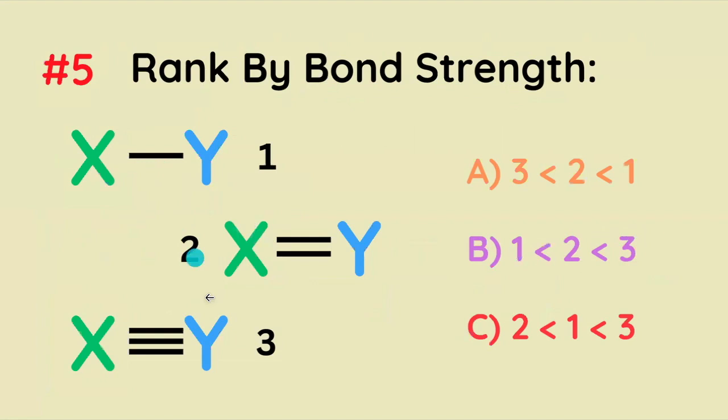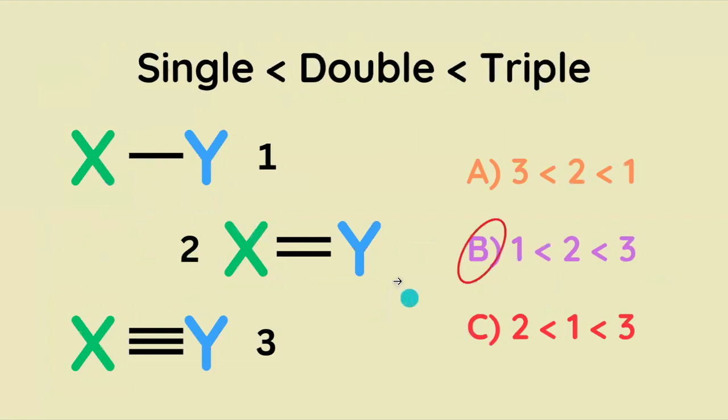Rank each of these bonds by strength. The correct answer is B. The single is the weakest, then the double, then the triple is the strongest.